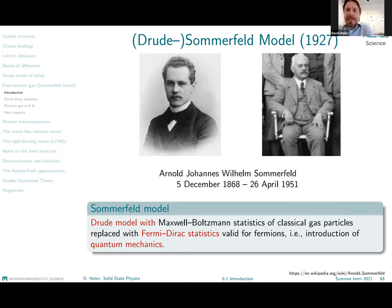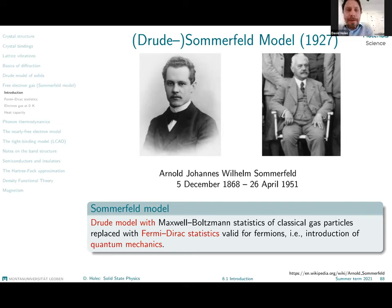The Fermi-Dirac statistics is something that you have heard about before. It is a description of the energy distribution of fermions — particles which follow quantum mechanical rules and are so-called half-spin particles. We'll come to both of these things in a second.